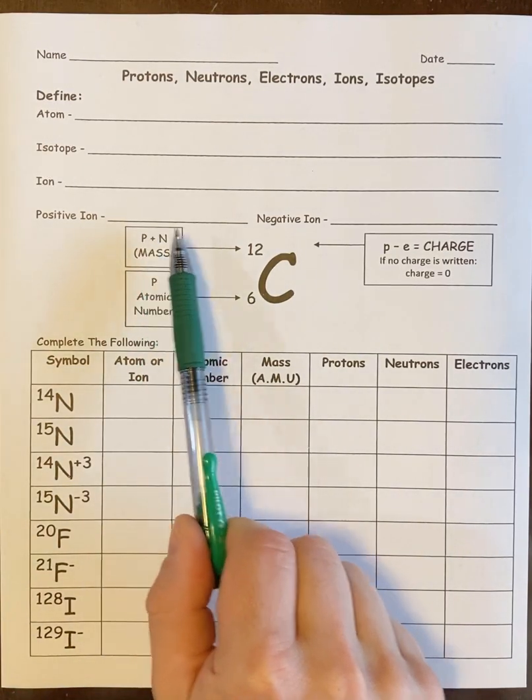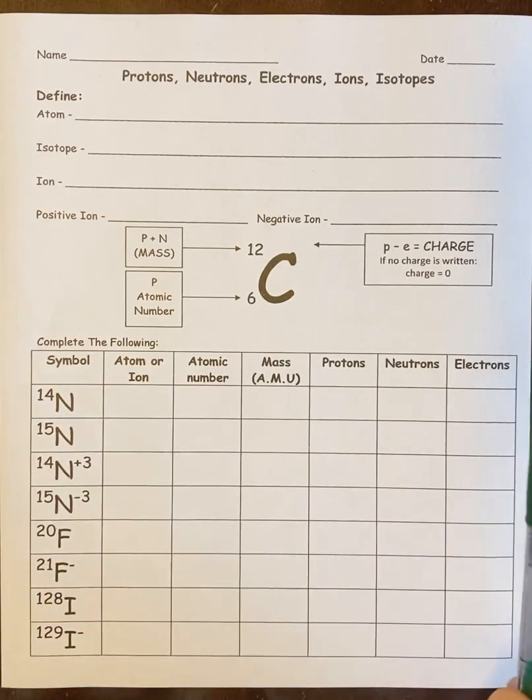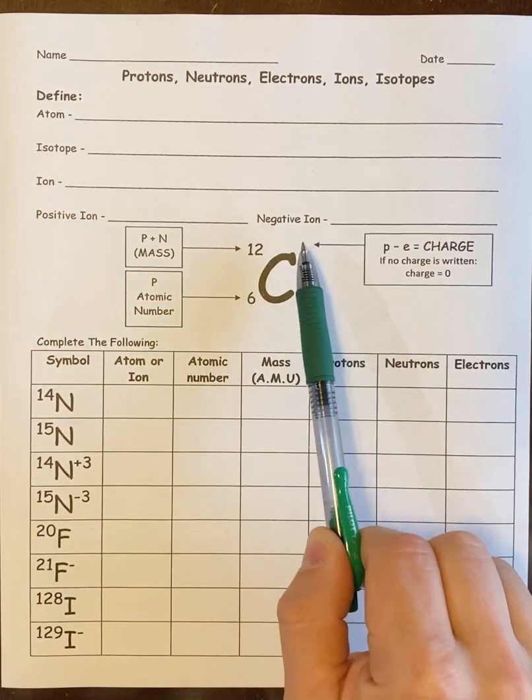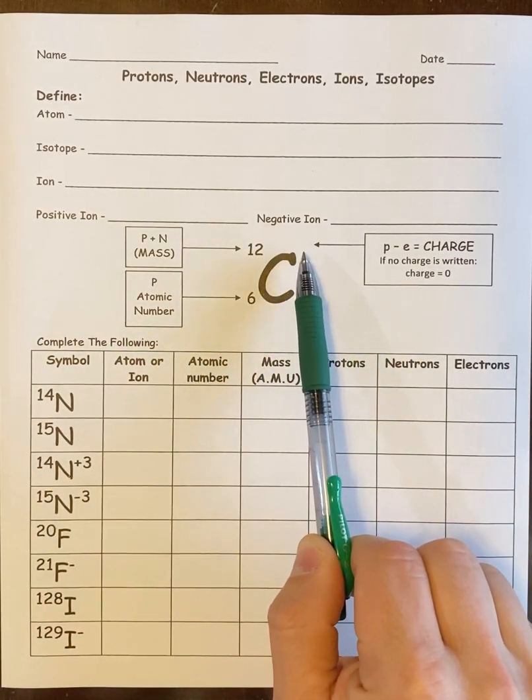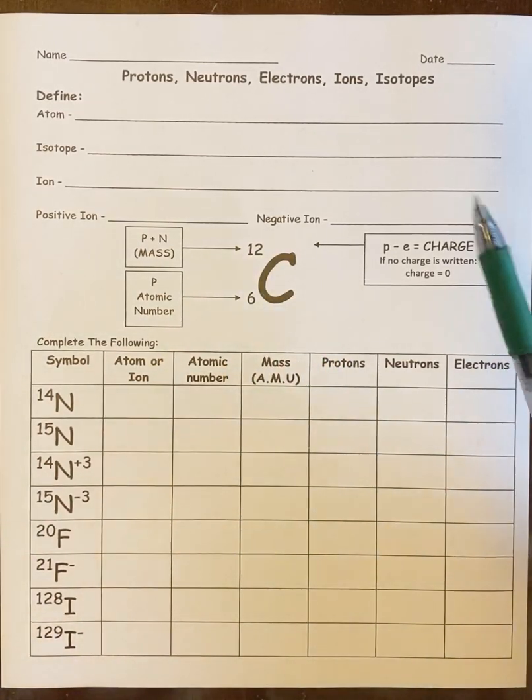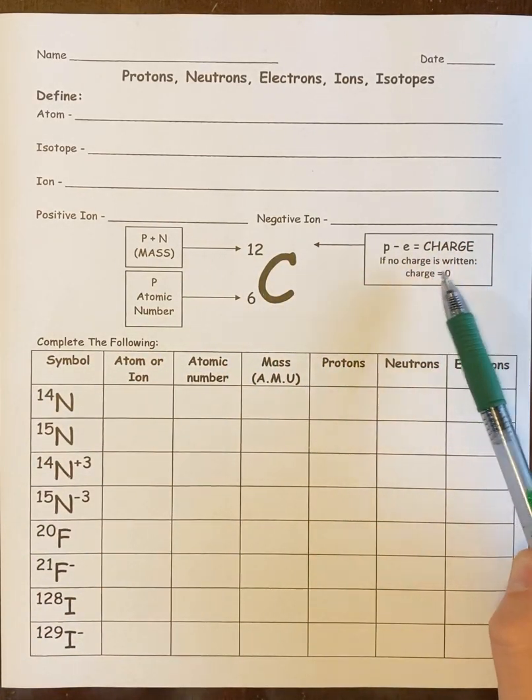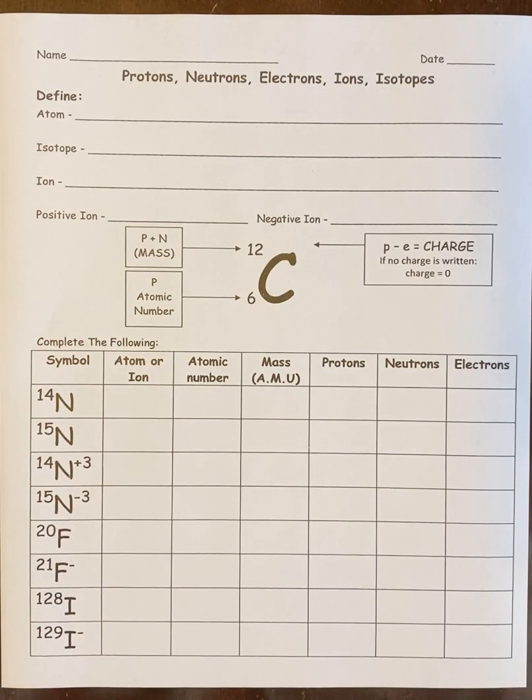So mass number is P plus N, atomic number is P alone. That's what identifies the element. And for charge in the top right-hand corner, remember, if there's nothing written, we assume zero. So it's P minus E equals C. So if there's no charge, we assume zero. Let's do a couple problems.